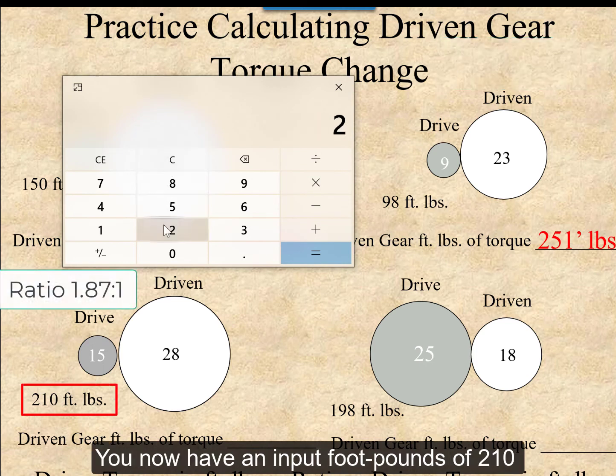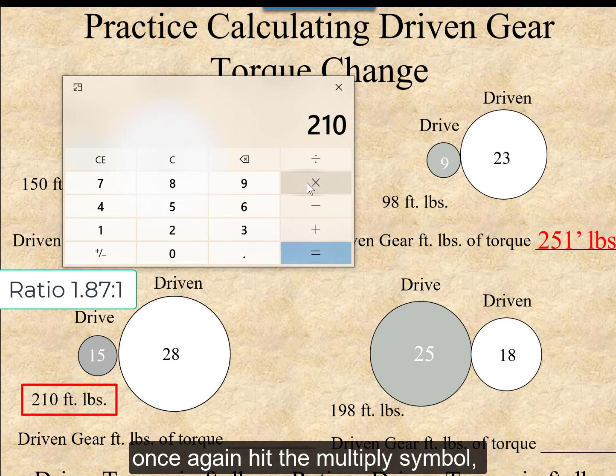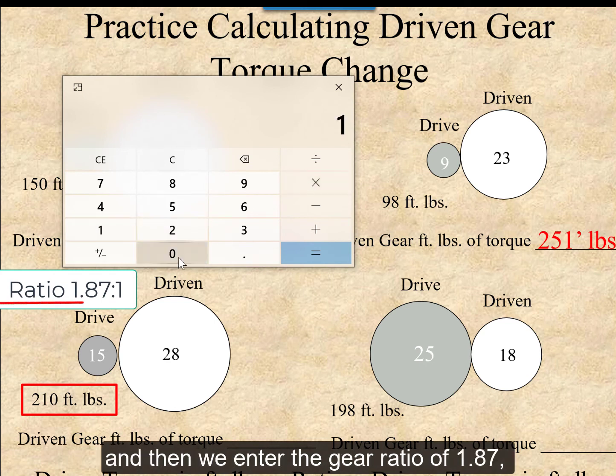We now have an input foot-pounds of 210, so we input that into the calculator. Once again, hit the multiply symbol, and then we enter the gear ratio of 1.87.